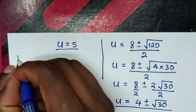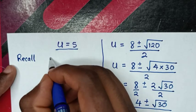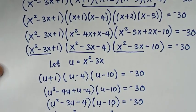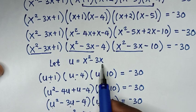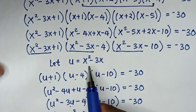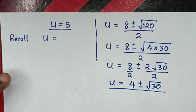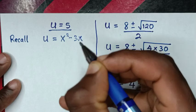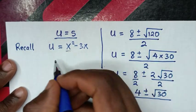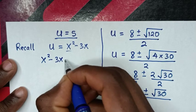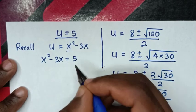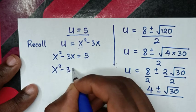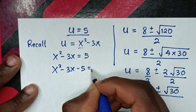Recalling that u = x²-3x, we now find x. For u=5: x²-3x = 5, which gives x²-3x-5 = 0.